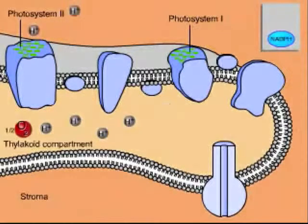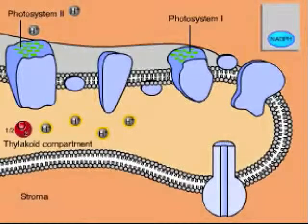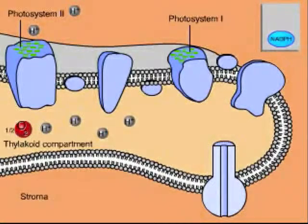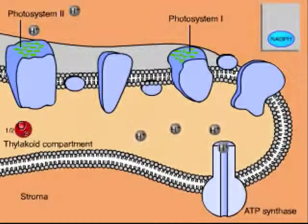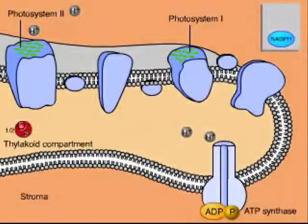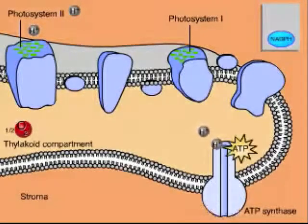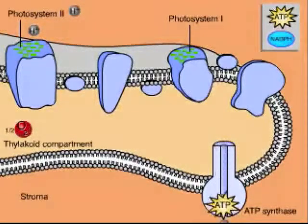The buildup of hydrogen ions inside the thylakoid compartment stores potential energy. This energy is harvested by an enzyme called ATP synthase. As hydrogen ions diffuse through ATP synthase down their concentration gradient, the enzyme uses the energy of the moving ions to make ATP.